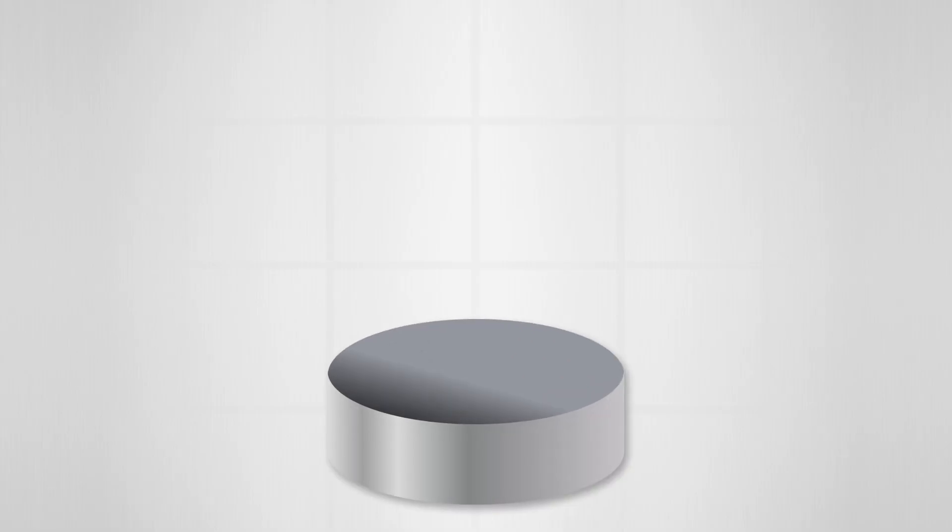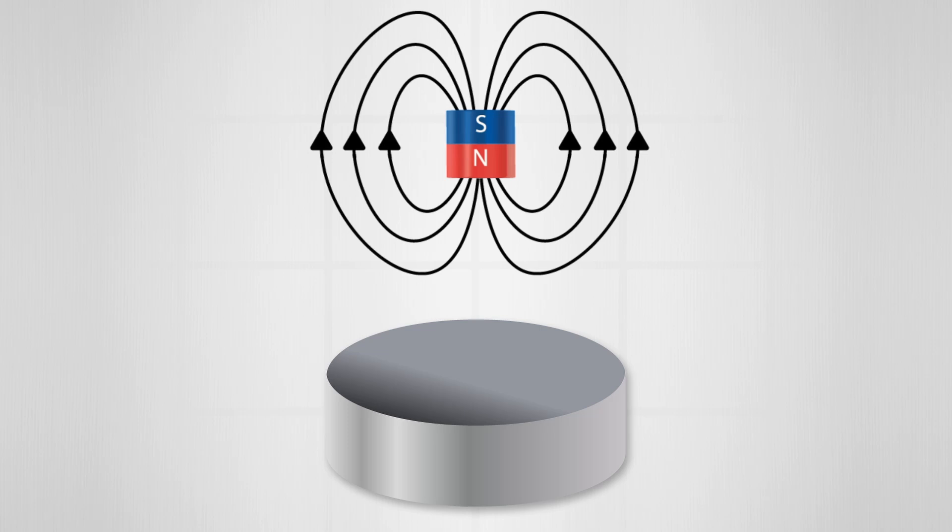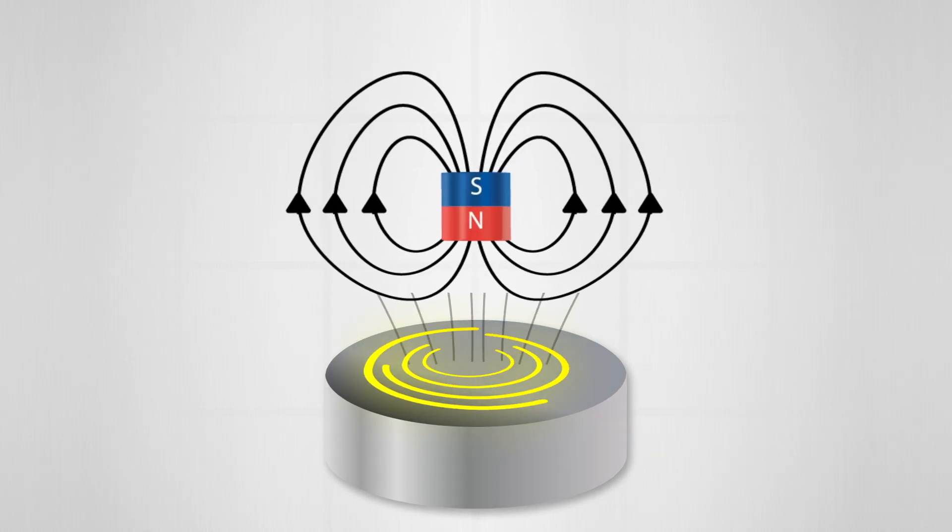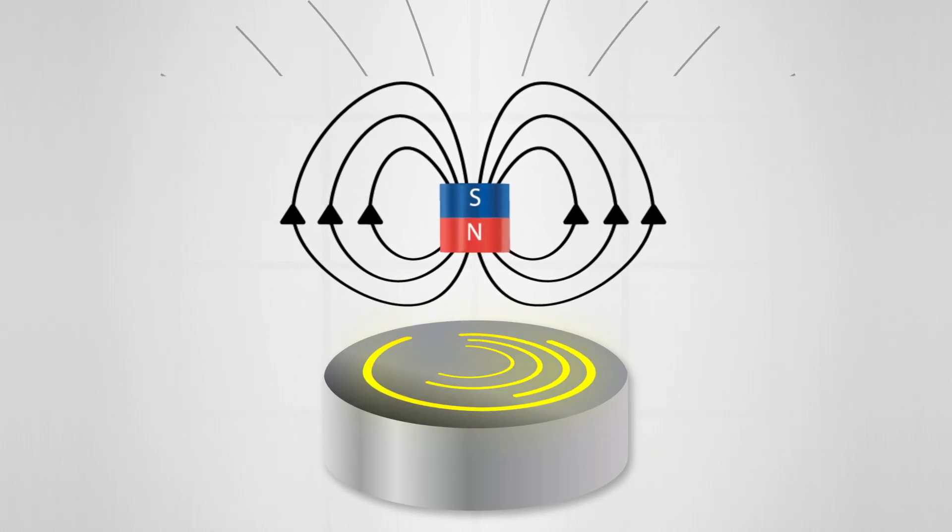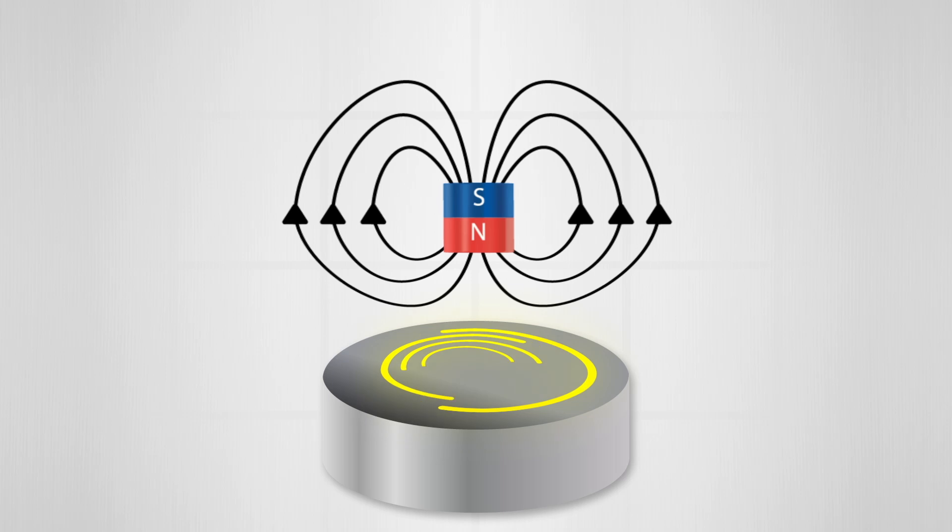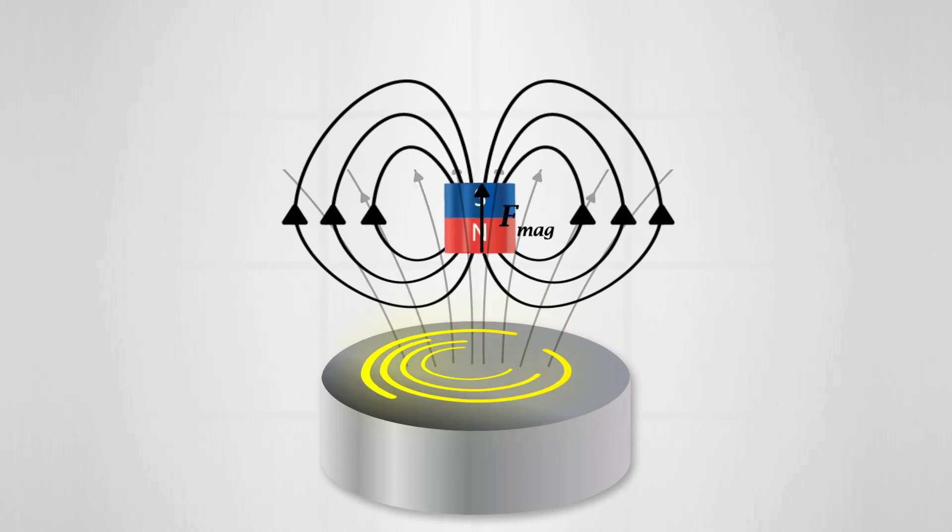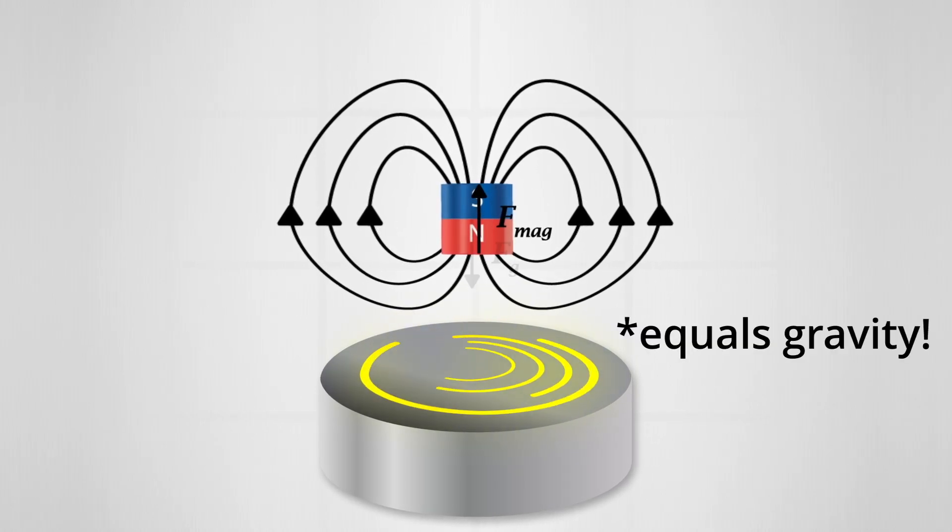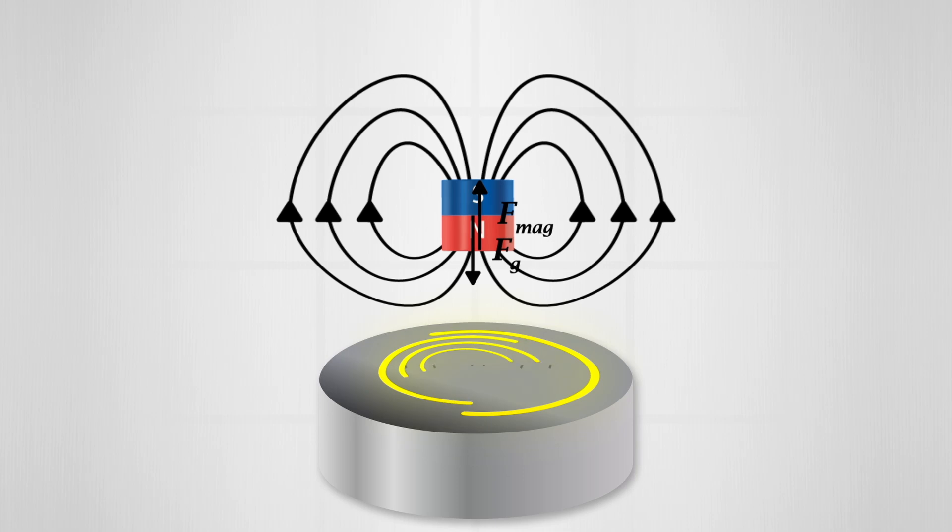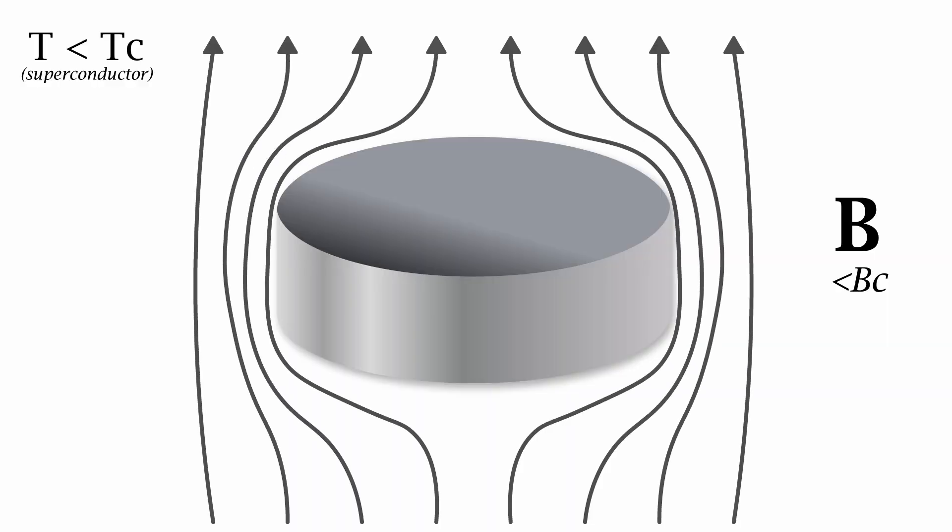So what ends up happening when we put a magnet above a superconductor is that the magnetic field lines are bent around the superconductor. And this bending of lines generates a force. And when this force is stronger than gravity, we can have a magnet levitate. So a magnet levitates because the magnetic field cannot penetrate the superconductor, which results in an upward force.